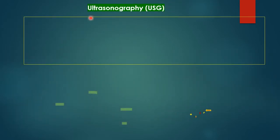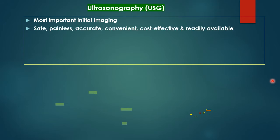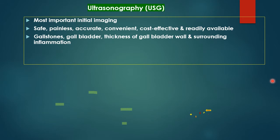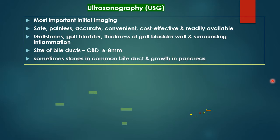Ultrasound has become the most important preliminary investigation of all biliary conditions. It is safe, painless, accurate, convenient, cost-effective, and readily available. Gallstones, gallbladder wall thickness, and surrounding inflammation can all be detected. The normal CBD size is 6–8 millimeters. Sometimes stones in the common bile duct and growths in the pancreas can also be detected. An ultrasound showing a gallbladder with hypoechogenic shadows casting posterior acoustic shadowing is diagnostic of gallstones.